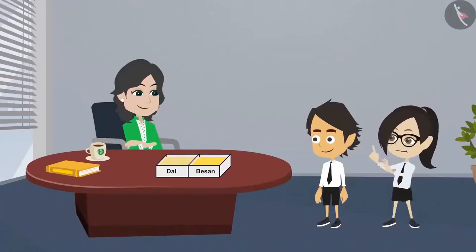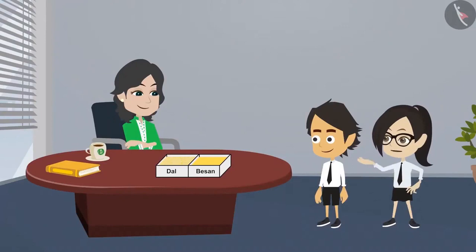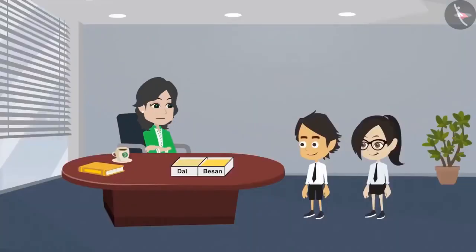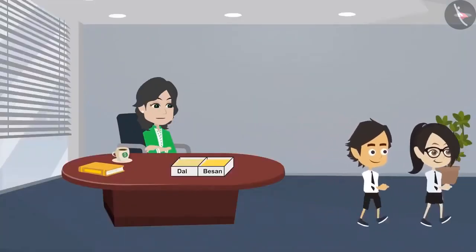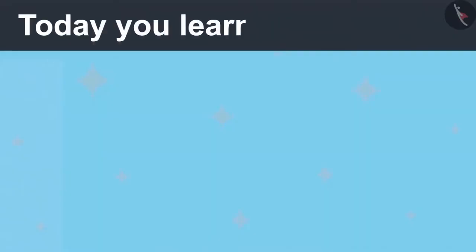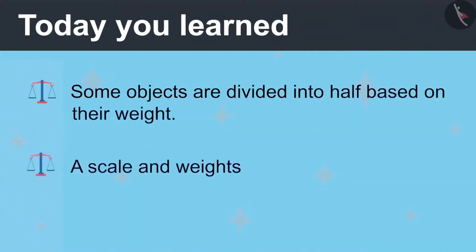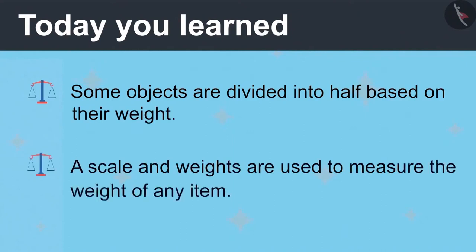I have understood, madam. Some objects have to be measured using weights to divide them. Absolutely right, Vandana. Now it is time for your class, so please go. Today you've learned that some objects are divided into half based on their weight. A scale and weights are used to measure the weight of any item.